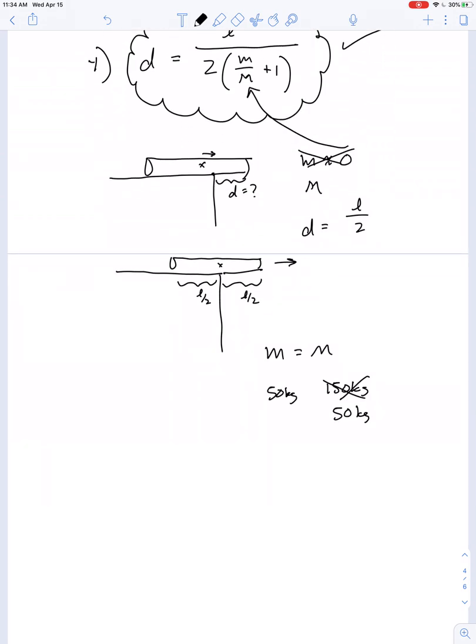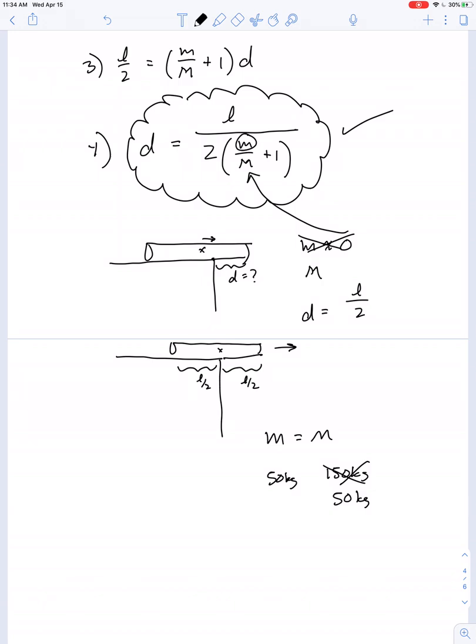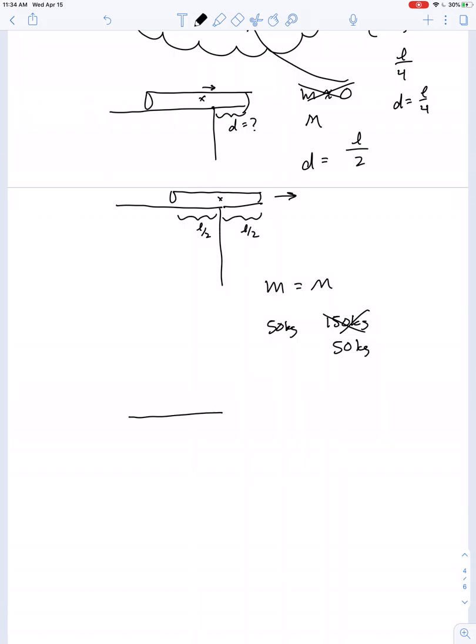Well if we use our equation, if M and M are equal this becomes L over 2 times the quantity 1 plus 1, in other words becomes L over 4. So D would be L over 4 meaning a quarter of the log can stick out over the edge. Would that be right?